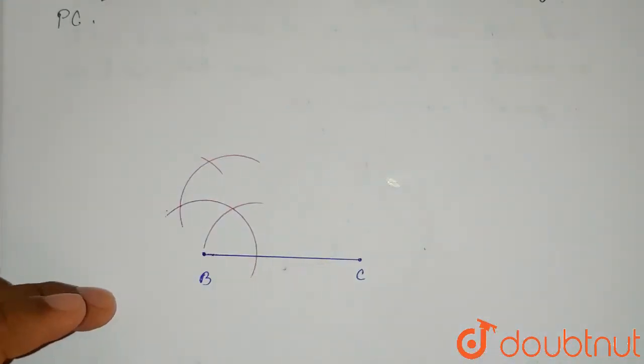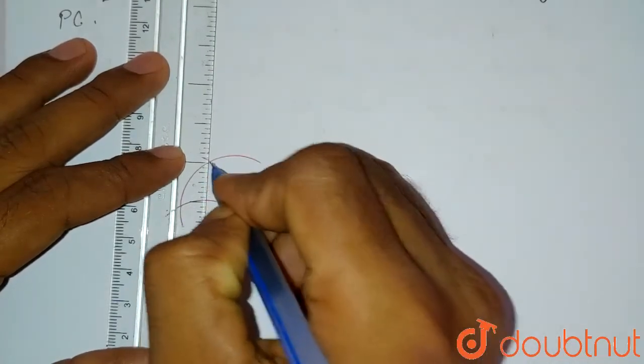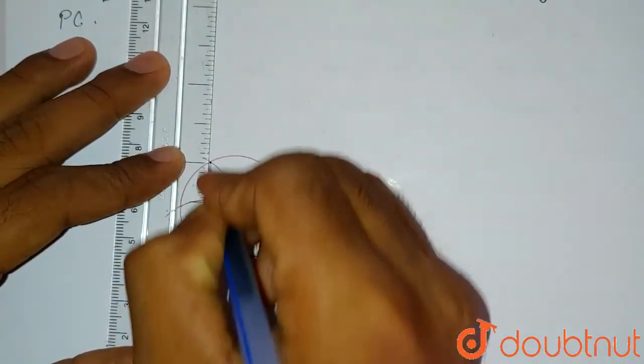Now what we will do? We will add these two points, this point and this point. So we will get our 90 degree line.